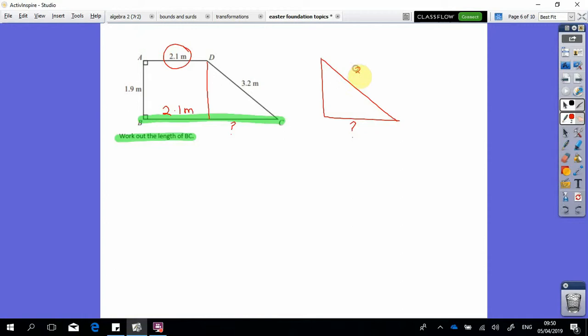I know that this bit here is 3.2 meters and the height is 1.9 meters. And I've cut it perpendicular - I've cut it at right angles - and that is where our right angle triangle comes from.